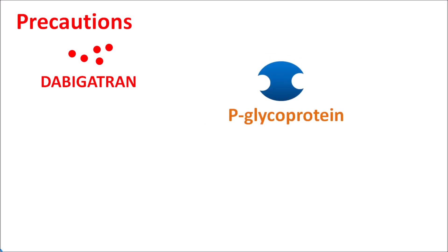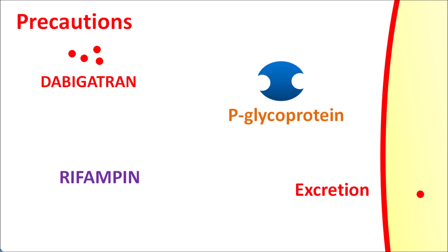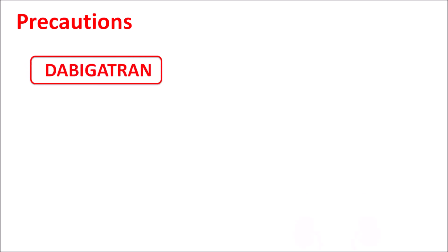One important precaution is that dabigatran shows interaction at P-glycoprotein, an efflux pump that increases drug excretion from the body. Dabigatran can be excreted by this pump into the urine, so its excretion is highly influenced by P-glycoprotein. Some drugs act as inducers of P-glycoprotein — for instance, rifampin, an anti-tuberculosis drug, increases P-glycoprotein expression, causing more dabigatran to be effluxed and increasing its excretion. In the presence of P-glycoprotein inducers such as rifampin, this drug should be avoided, as it reduces efficacy and increases the risk of stroke and thrombotic events.